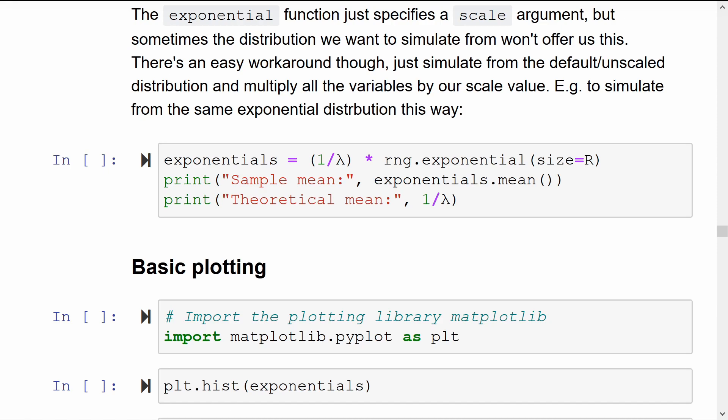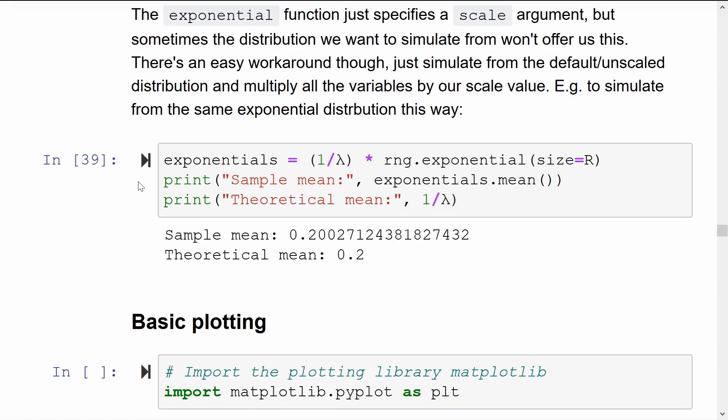But then, if we scale that entire vector by 1 divided by lambda component-wise, then that is the exact same as what we did before. This is exactly what happens with the scale parameter inside of the RNG functions.